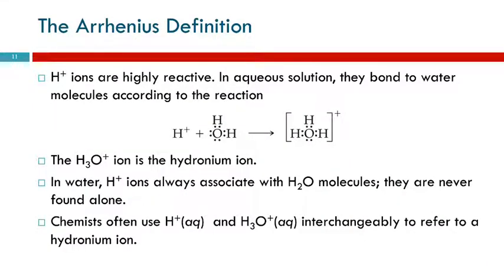What is a hydrogen ion? A hydrogen atom has one proton and one electron. So a hydrogen ion with a plus-one charge has zero electrons — all it is is a proton, a bare naked little proton. That's not very stable. Hydrogen ions are highly reactive; you don't find hydrogen ions by themselves. In aqueous solution, this hydrogen ion is going to bond to a water molecule.